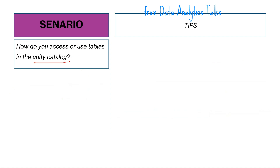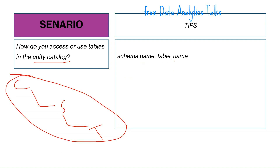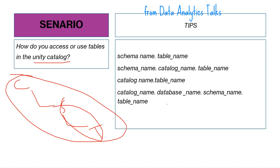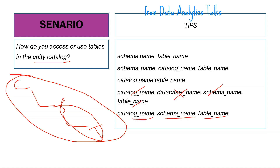Scenario six: how do you access or use tables in the Unity Catalog? The Unity Catalog follows a three-level hierarchy: catalog, then schema, then table. The fully qualified name format is: catalog_name.schema_name.table_name. Options with incorrect ordering or missing levels are wrong. Remember: catalog name, schema name, then table name — this type of question can appear in the exam.